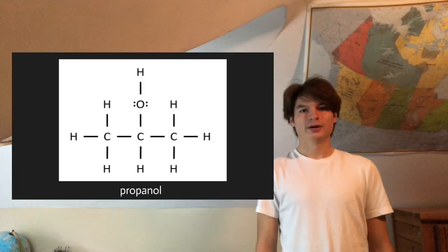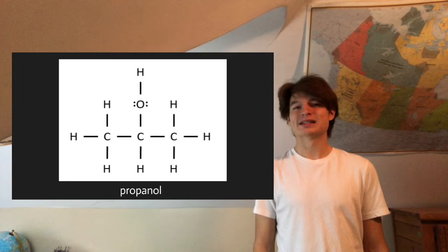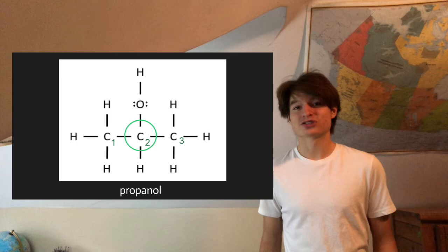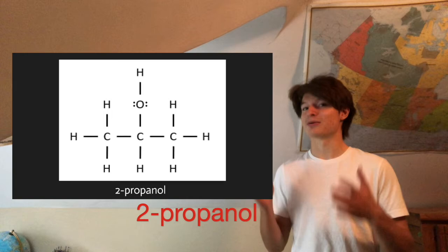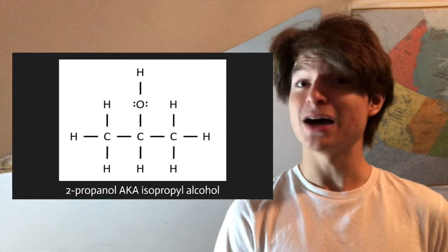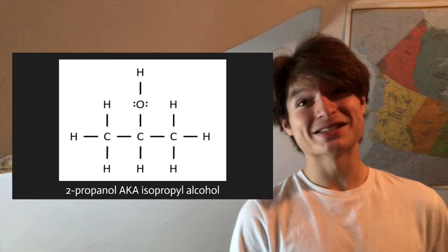The last step in naming this is we need to identify where the OH group is along the parent chain. No matter which end you start from in this case, the hydroxyl group is located on the second carbon in the chain. So we're going to add a 2 and then a dash in front of propanol, giving us the name 2-propanol. Interestingly, the common name for 2-propanol is isopropyl alcohol — what we were talking about at the beginning of this video. So that's the stuff you've been putting on your hands this whole time.